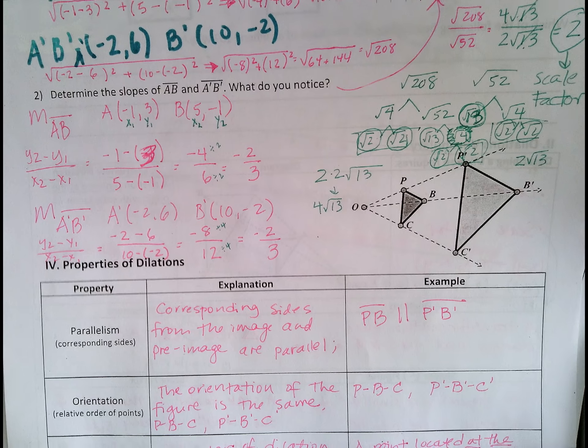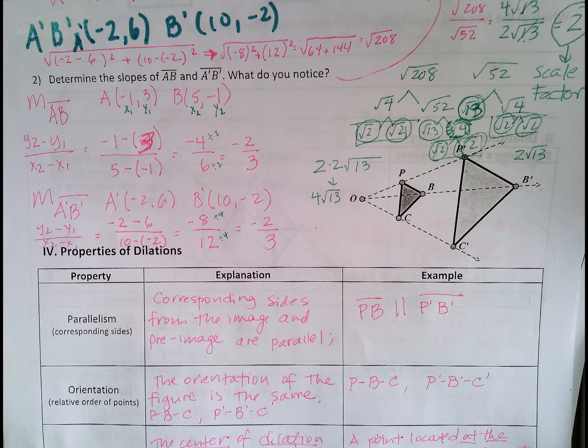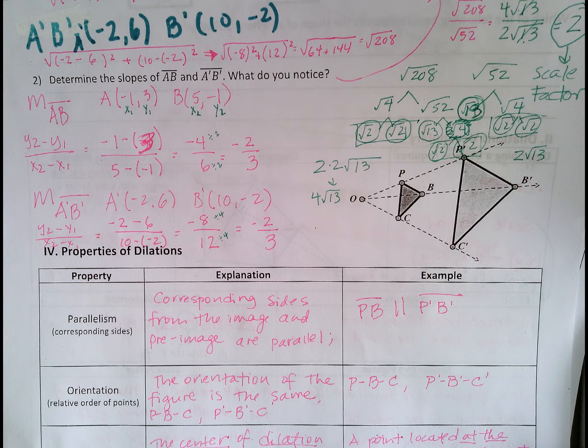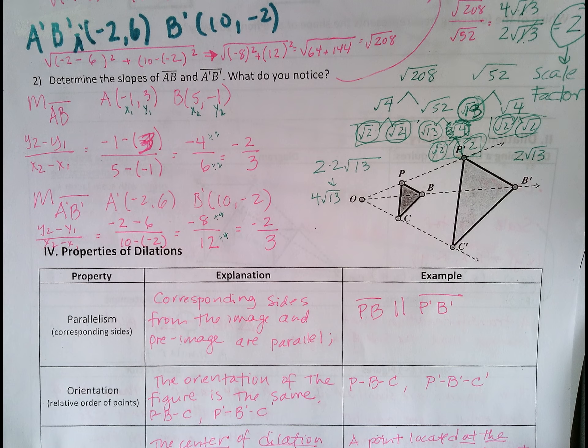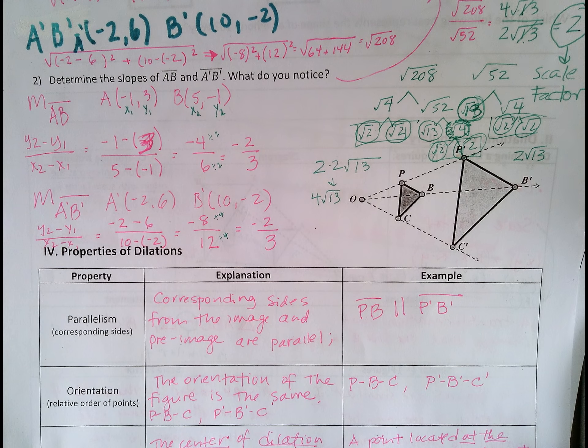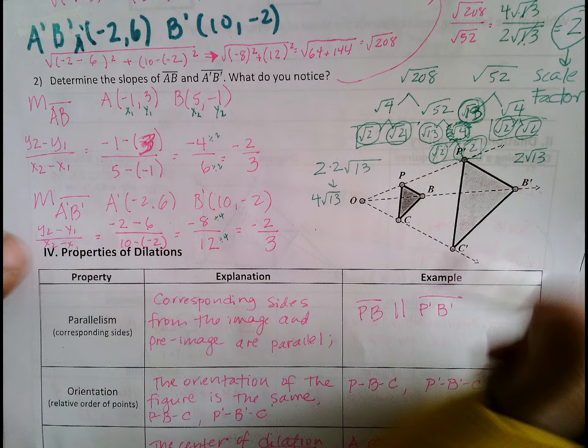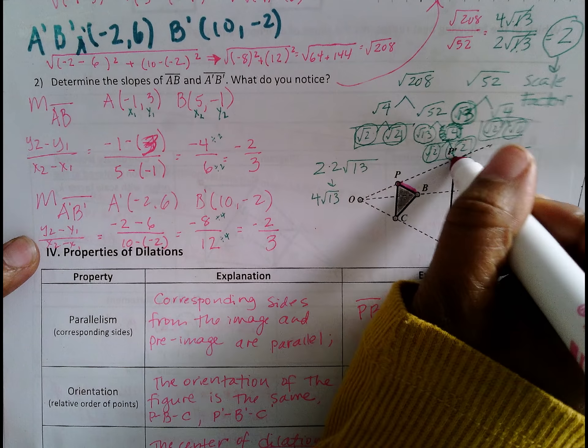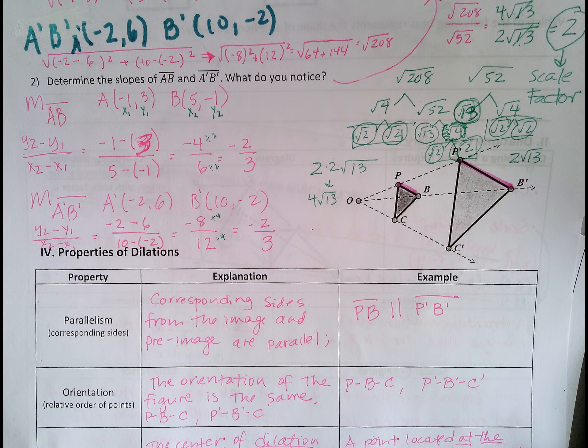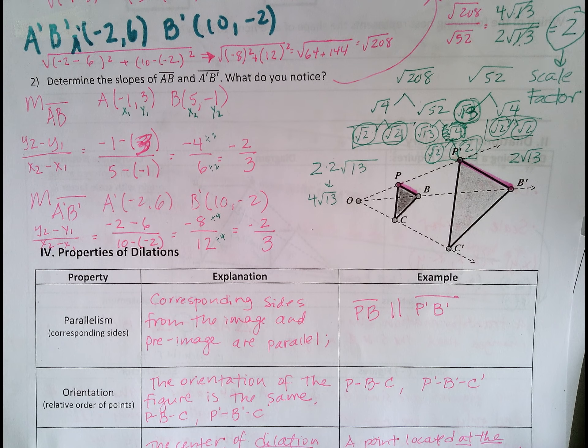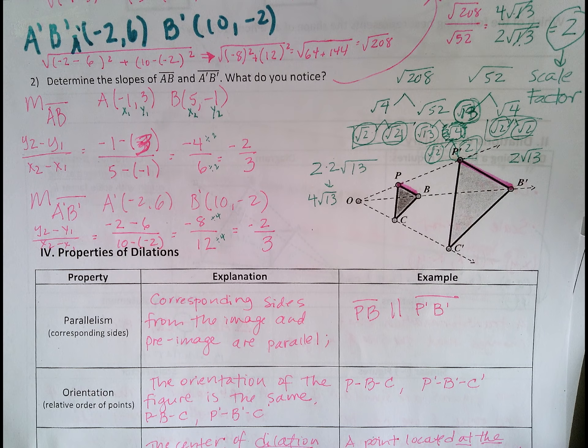Properties of dilation. So one property is parallelism, which is what we just talked about. Corresponding sides, and in this case, let's talk about where the corresponding sides are. When we talk about corresponding, it means that it's in the same location. So for example, PB corresponds with P'B', and it's really important to know corresponding sides. That's going to come up with similarity and proportions and proportional relationships. So that means that PB is corresponding with P'B', because they're in the same location.